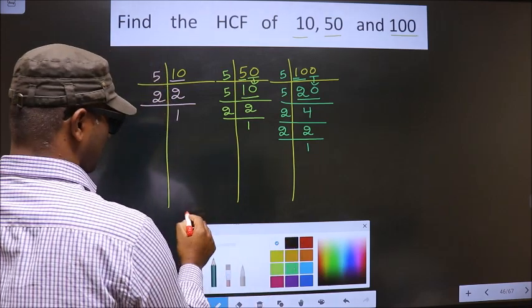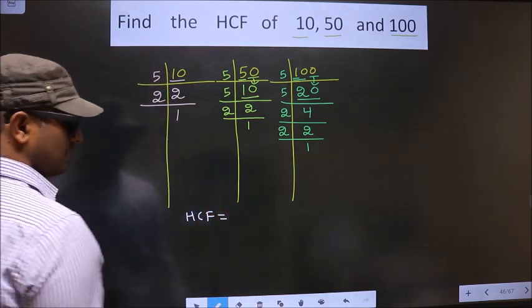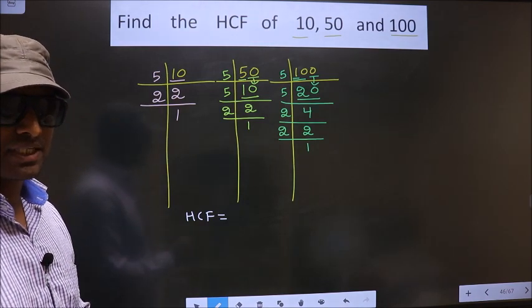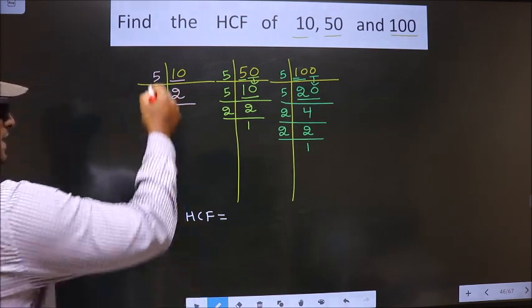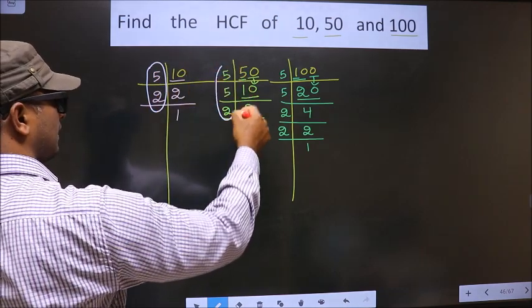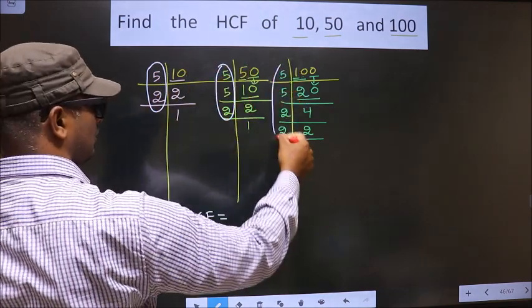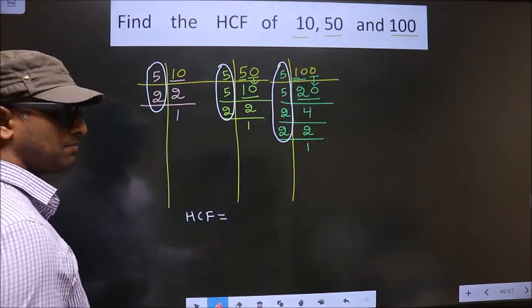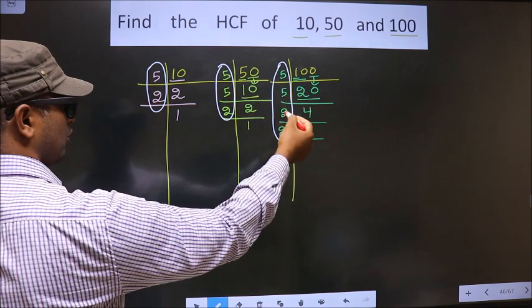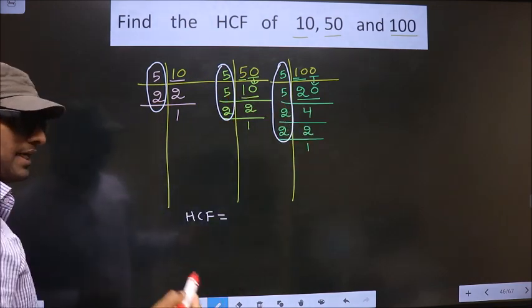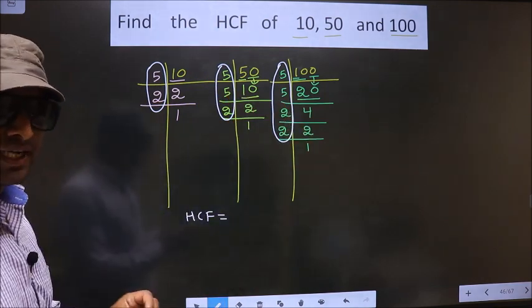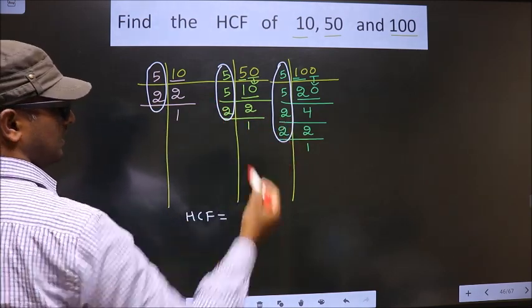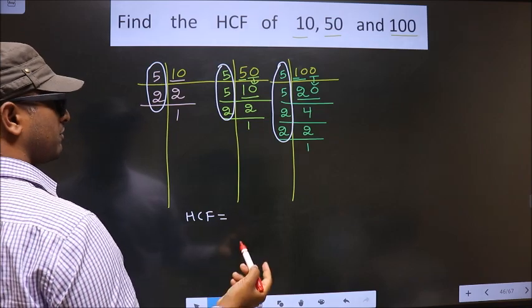So now our HCF is the product of numbers that are present here, here, and also here. We should find the numbers that are present in all three factorizations.